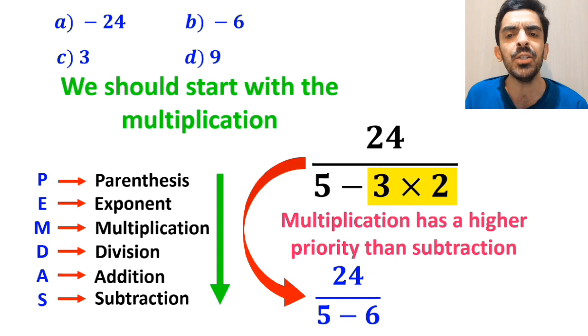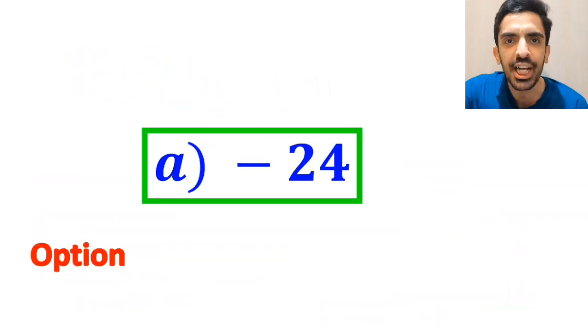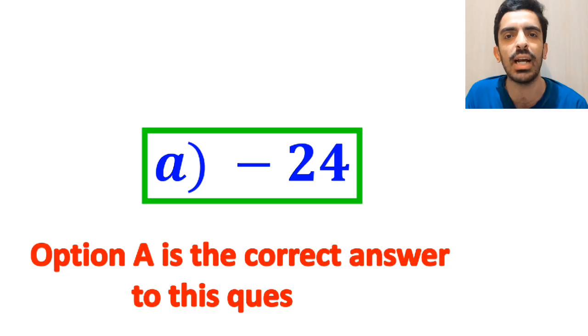So, this expression simplifies to 24 over 5 minus 6, which further simplifies to 24 over negative 1. And finally, we get the answer negative 24. Therefore, option A is the correct answer to this question.